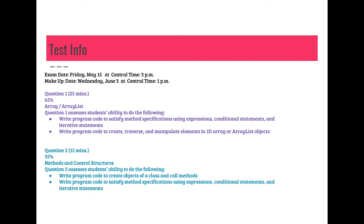The other part of the test is on methods and control structures. This is going to be a 15-minute section and it's 35 percent of the test. You have to write code to create objects of a class and call methods, and write code to satisfy method specifications. Conditional statements and loops as well. With the timing — 25 and 15 minutes — that would leave a five-minute break in between the two sections, though it might just be a grace period.